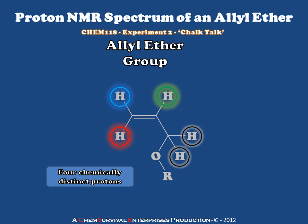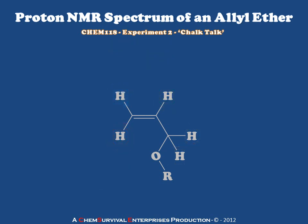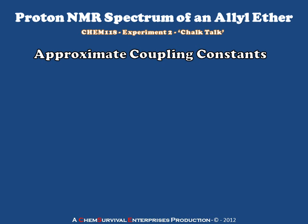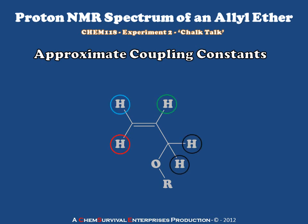The two protons highlighted in black are in fact identical in some molecules, but may be diastereotopic in others depending upon the nature of the R group. Since we're working on a generic allyl ether group, I'm going to leave them as being exactly the same as one another. Because we have so many different chemically distinct protons around this allyl ether group, there are going to be a lot of couplings, and the coupling constants are not the average of 5, 6, or 7 hertz we're used to seeing. Let's look at the approximate coupling constants and use them to predict the multiplicity of the resonances we expect to see.